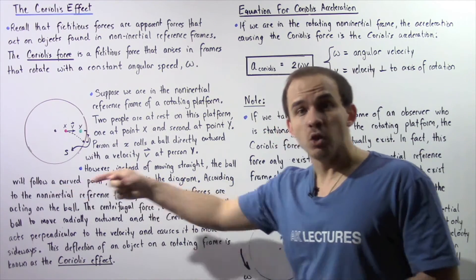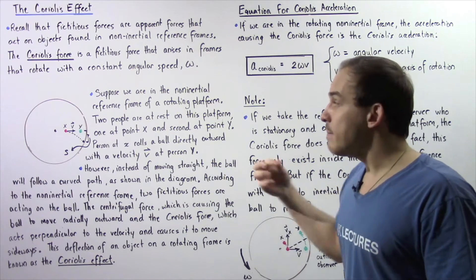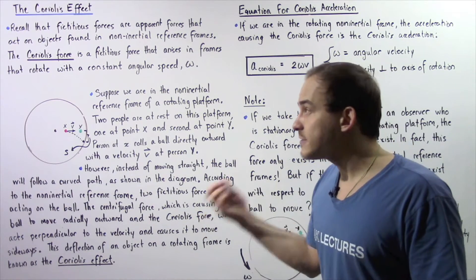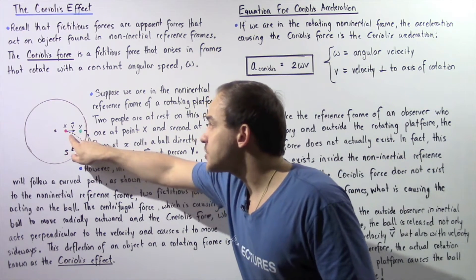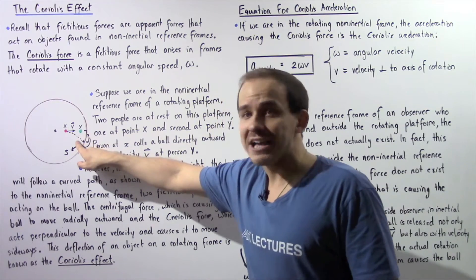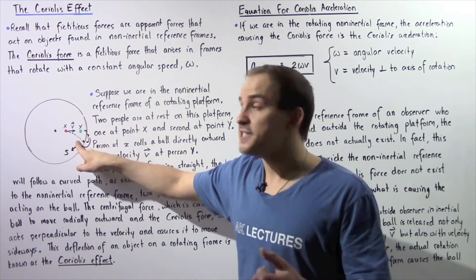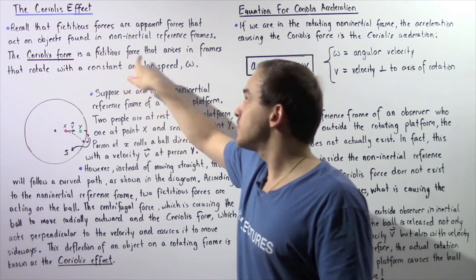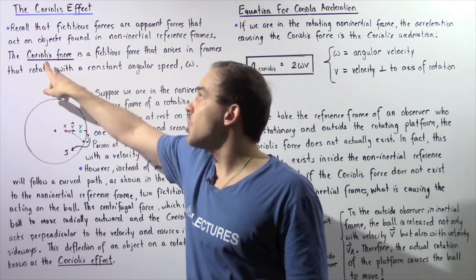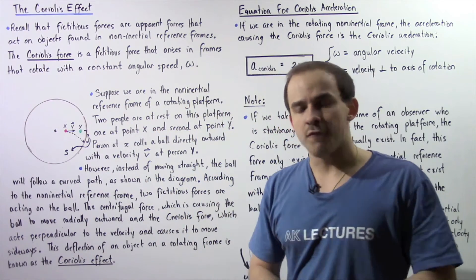Instead of following a straight pathway, the pathway that is followed will be this curved dashed line, and the reason is because of this fictitious force known as the Coriolis force.